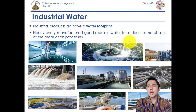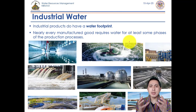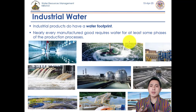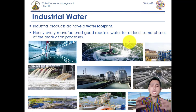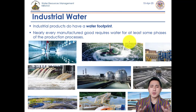Water footprint is the amount of water being used by an individual commodity, product, or anything — it can be an individual, a community, or a nation. Every industrial product has a water footprint. The phone I'm carrying right now consumed water to produce because it has to be washed, cooled down, and treated with water to clean all dust particles and dirt. Water footprint is associated with the product itself.